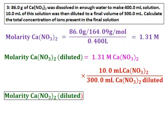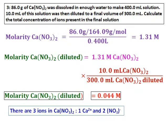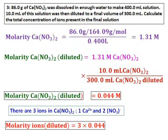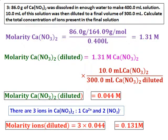But the question asks for the total concentration of ions present in the final solution. Calcium nitrate gives 1 calcium ion and 2 nitrate ions. Hence, the molarity of the ions in the diluted solution will be 3 times 0.044, which comes out as 0.131 molar.